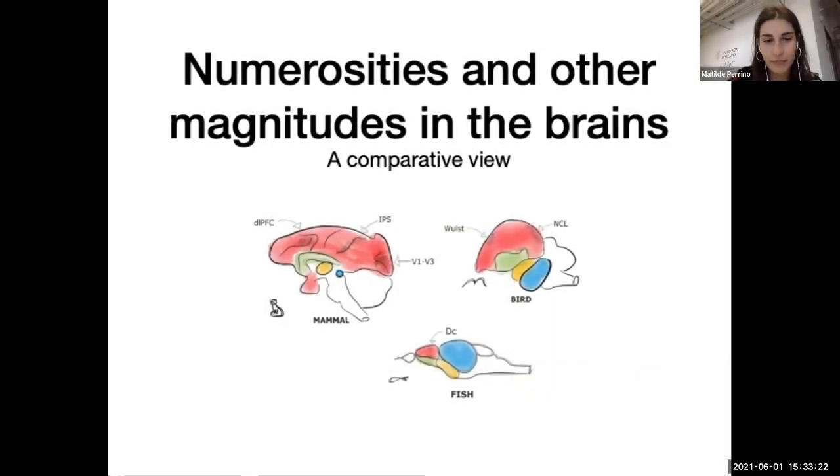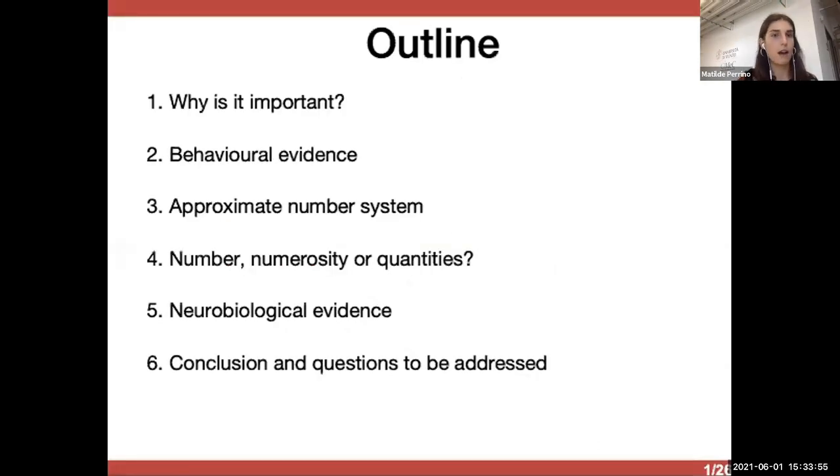Hi everyone, so today I will try to provide you an overview with respect to all the literature or what I've read about the main findings on how biological systems process numerical information. And also I will try to highlight what are some of the main critical points, also from my point of view, and I will be happy to receive any feedback about them.